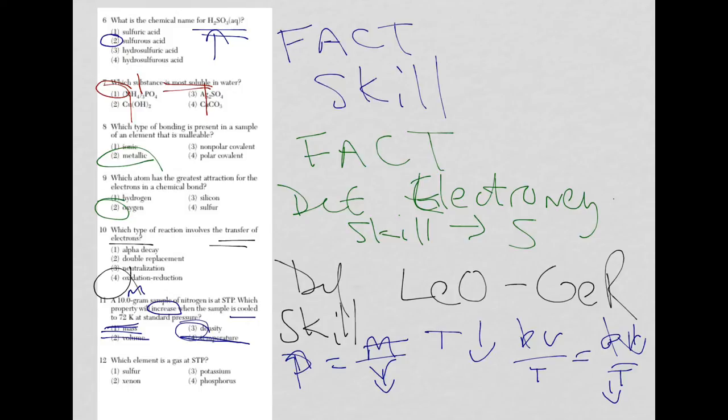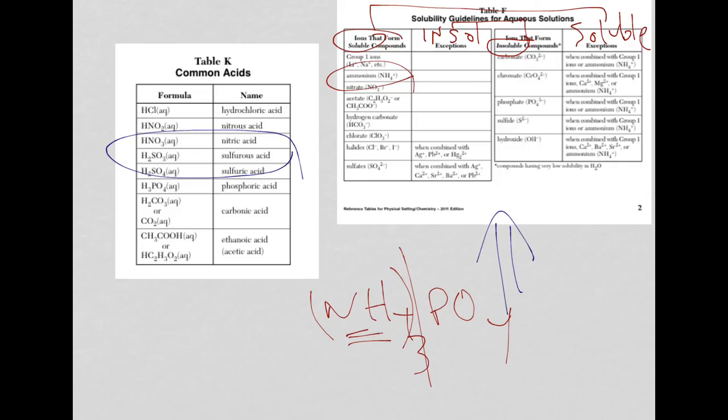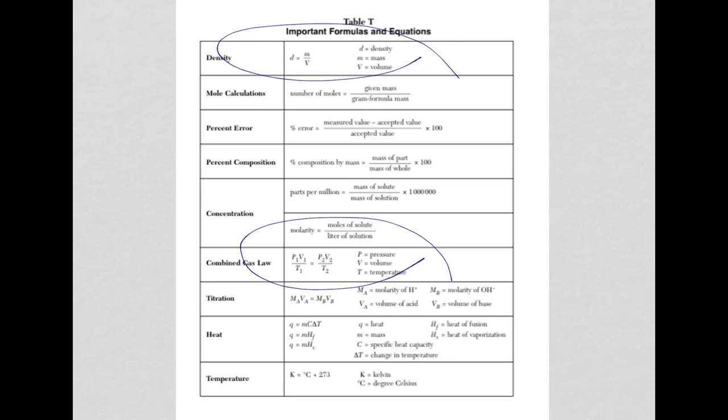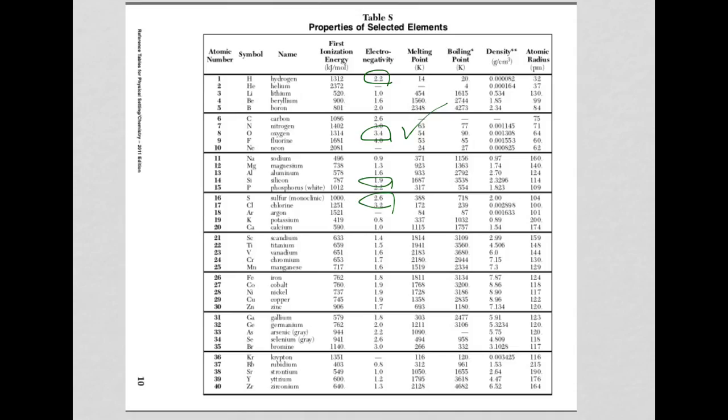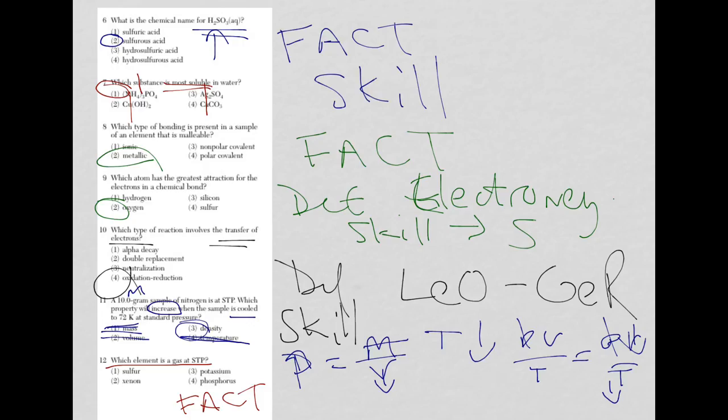And finally, for question twelve, which element is a gas at STP? Once again, we're back to facts. One of the ways you remember this is by looking at the periodic table. You have this group here, group eighteen. Yes, you know the name, they are the noble gases. Besides the noble gases, nitrogen, oxygen, fluorine, and hydrogen are your gases. So it's one of those. If we go back, sure enough, the best choice there is going to be xenon, which is choice two.